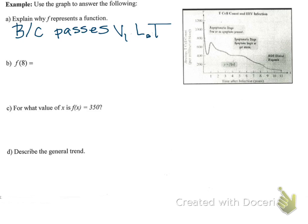And that just means that if I draw a vertical line anywhere on the graph, notice it only passes one time. Therefore, it's passing the vertical line test.